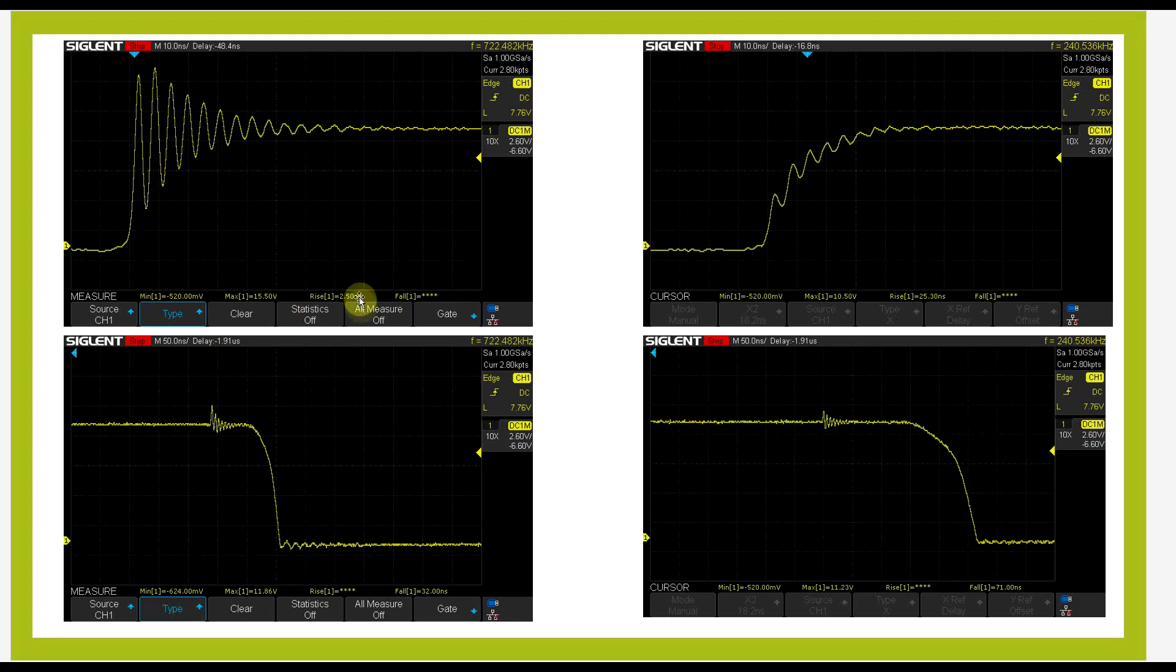so on the rising edge we went from 2.5 nanoseconds to around 25. On the falling edge we went from 32 nanoseconds to 71. But crucially, for the problem we have today, it took our peak voltage way lower. So before we had around 15.5 volts, now we barely go over the 10 volts of the supply. So by increasing the gate resistance, we took the overshoot way down. So if you can spare some efficiency, this is a very powerful and simple method to improve on things.